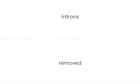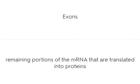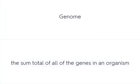Introns are removed. Codons are a sequence of three nucleotides that together form a unit of genetic code in a DNA or RNA molecule. Exons are the remaining portions of the mRNA that are translated into proteins. Point mutations occur when a single nucleotide is changed. The genome is the sum total of all of the genes in an organism.